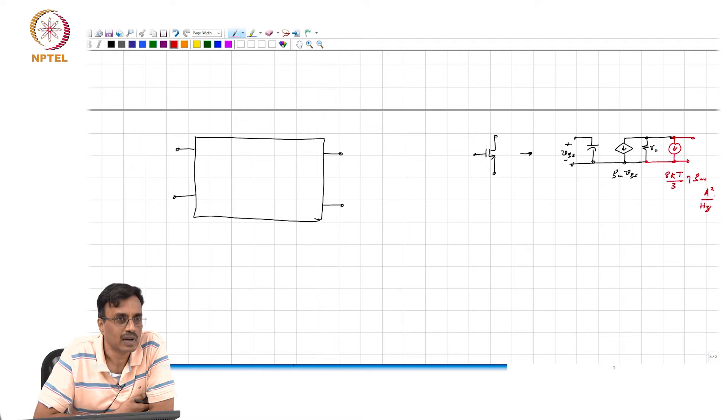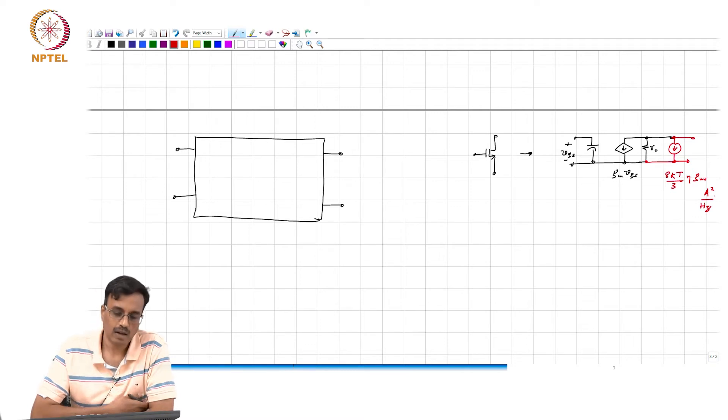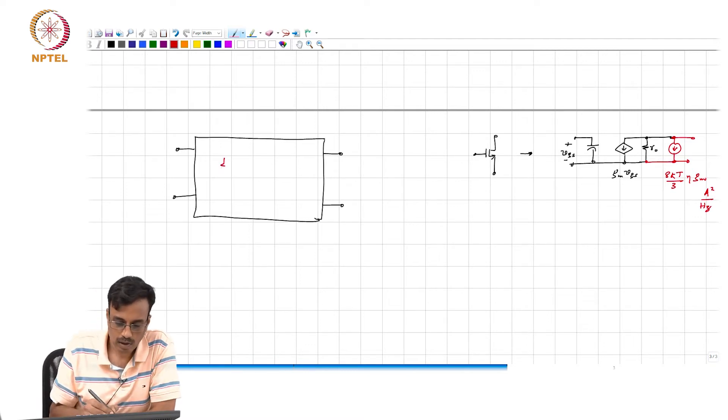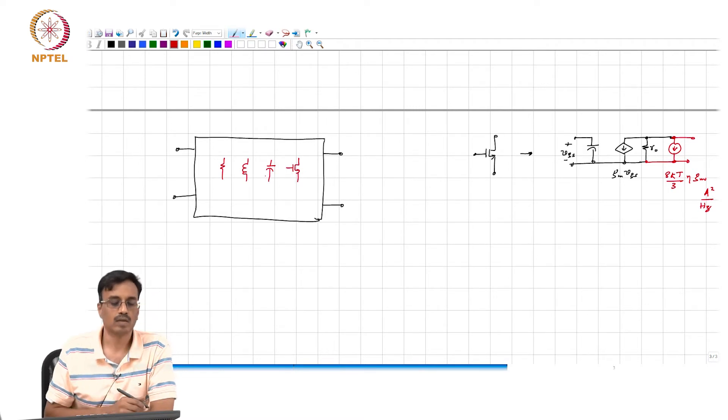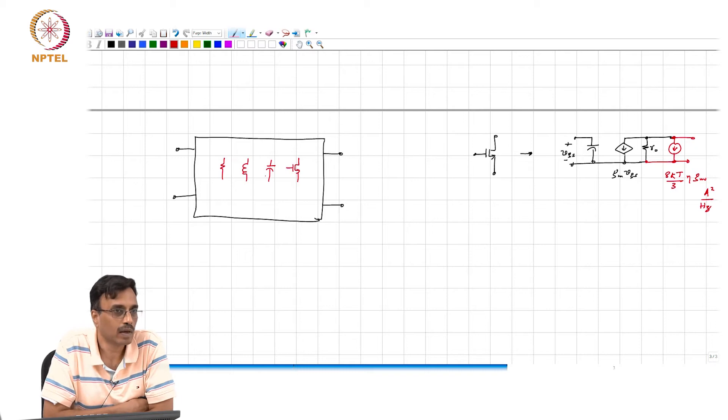You now end up with a linear network with R, L, C and then a whole bunch of noise sources inside.